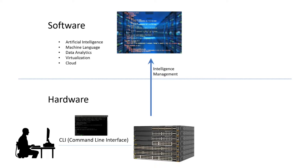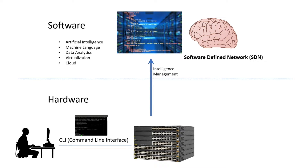With the movement of intelligence from hardware to software, software became the brain of the network, and this leads to the concept of software-defined network, which means the software is leading any change in the network. This helps in the advancement of new concepts like automation, for example. Now there was one challenge in this paradigm or in this architecture, which is programmability.